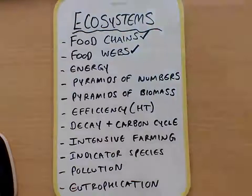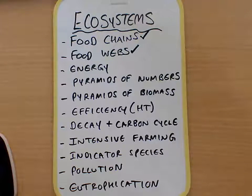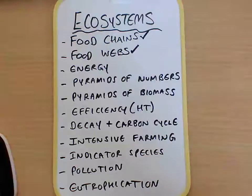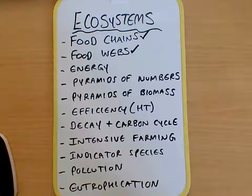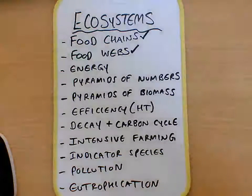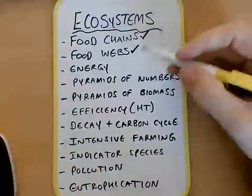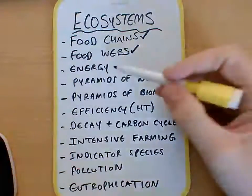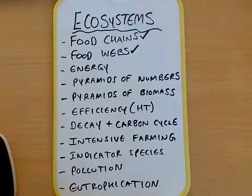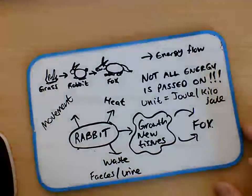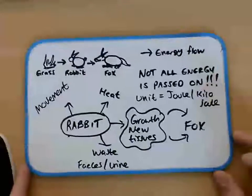Okay, hello everybody. This is an overview of the ecosystems topic. So far we've covered food chains and food webs. We're going to have a look at energy now. Of course, all energy in a food chain originally comes from the sun.